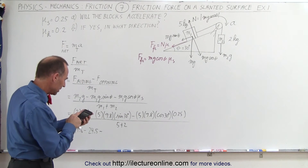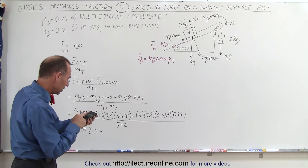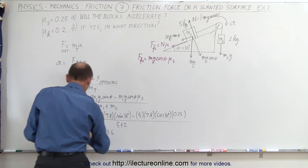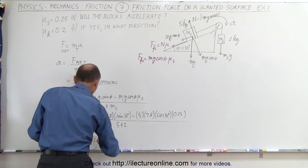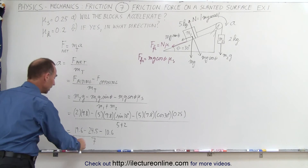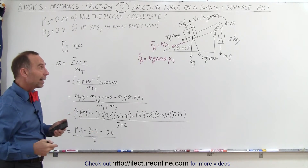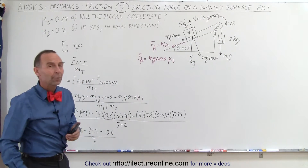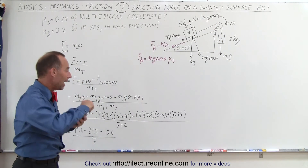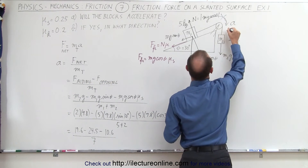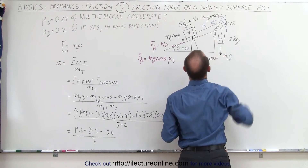For completeness: 49 times the cosine of 30 times 0.25 gives us minus another 10.6, divided by 7. The acceleration comes out as a negative quantity, meaning that there will not be an acceleration in the direction assumed. Now we're going to do this again in the opposite direction — we know this assumption is not true, so let's assume that maybe the system will accelerate in this direction instead.